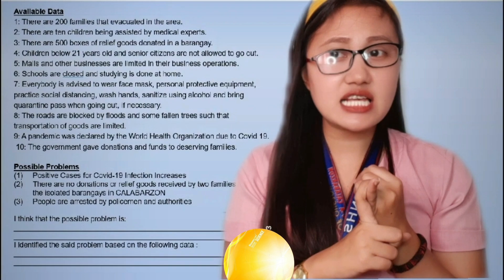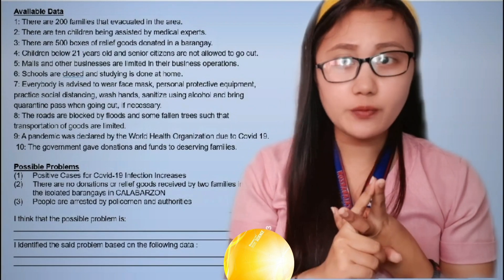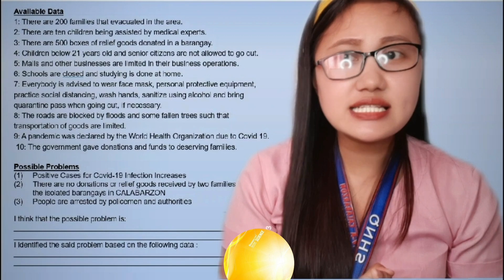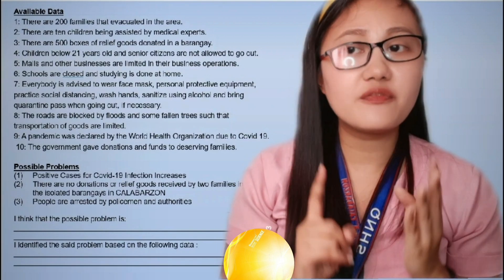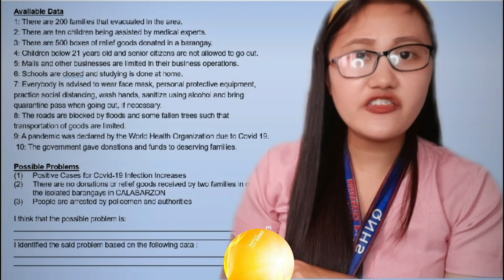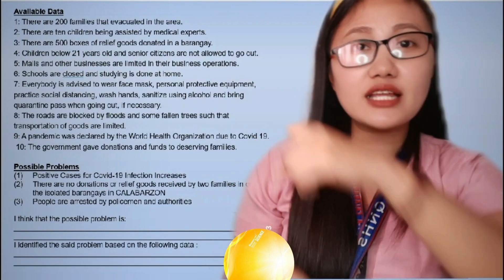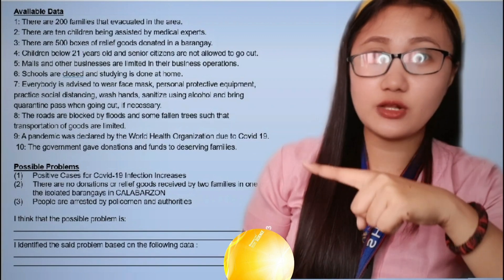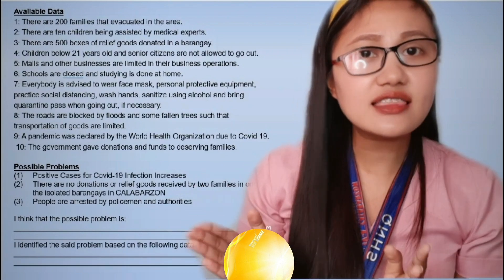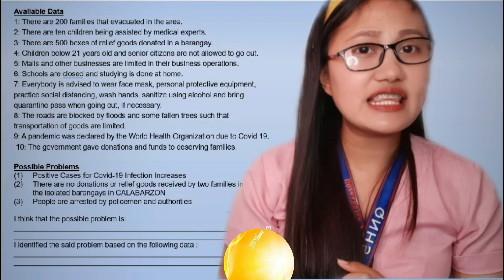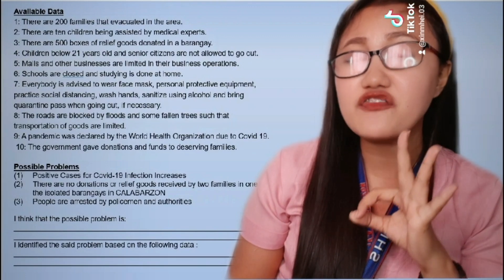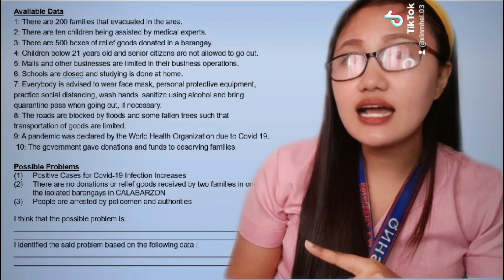So we have: Number 1 — positive cases for COVID-19 infection increases. Number 2 — there are no donations or relief goods received by two families in one of the isolated barangays in Calabarzon. And the third possible problem — people are arrested by policemen and authorities. So again, you will just choose one. And then for the second part, 'I identified the said problem based on the following data' — pipili naman kayo dito sa 10 nandito sa available data. Pumili daw ako ng tatlong available data that will support the said possible problem.